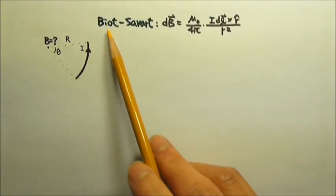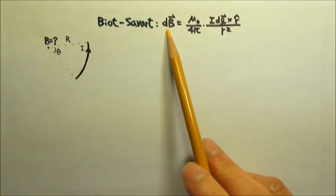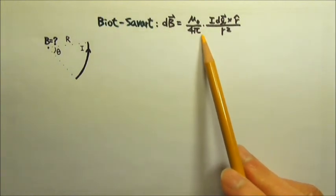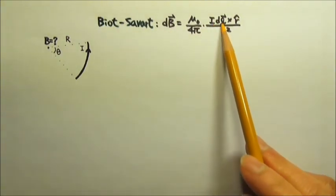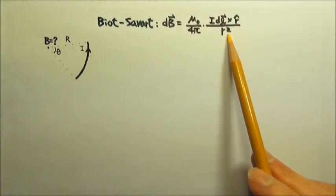For this problem, we can use the Biot-Savart law. dB equals mu naught over 4π times I dL cross the unit vector R divided by R squared.